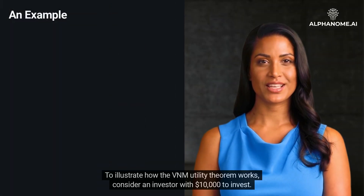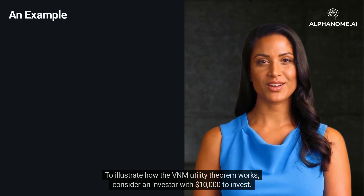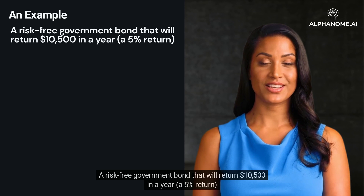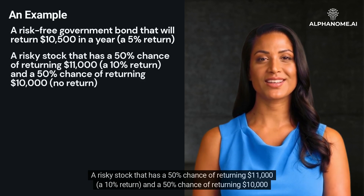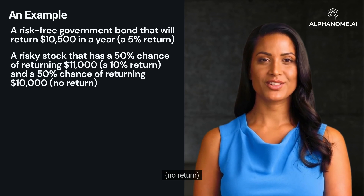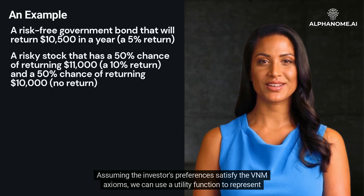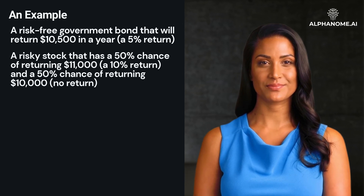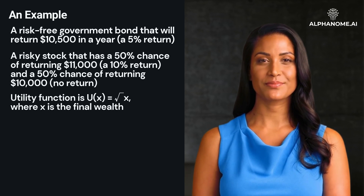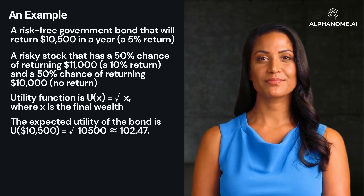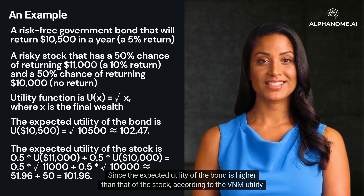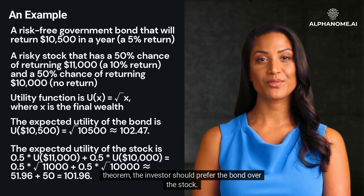To illustrate how the VNM Utility Theorem works, consider an investor with $10,000 to invest. They have two options: a risk-free government bond returning $10,500 in a year (5% return), or a risky stock with a 50% chance of returning $11,000 (10% return) and a 50% chance of returning $10,000 (no return). Assuming the investor's utility function is u(x) = √x, the expected utility of the bond is 102.47 and the expected utility of the stock is 101.96. Since the bond's expected utility is higher, the investor should prefer the bond over the stock.